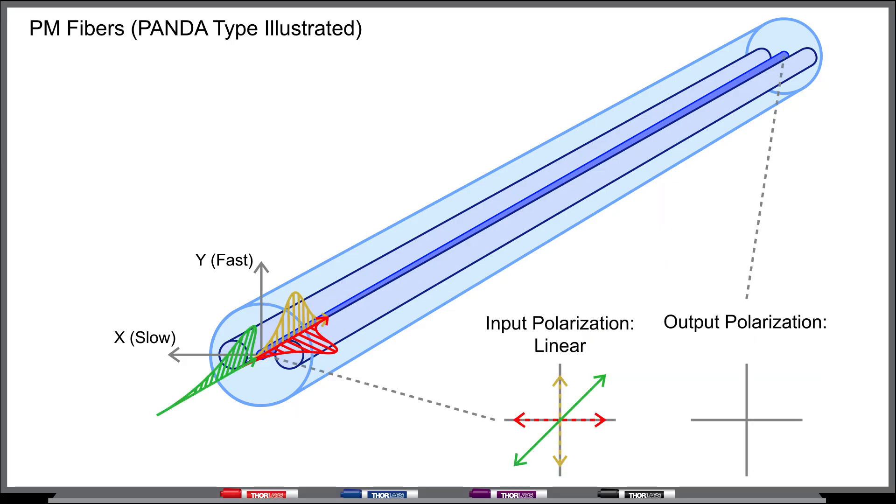If light is coupled into both axes, the component parallel to the slow axis will be delayed with respect to the component parallel to the fast axis.